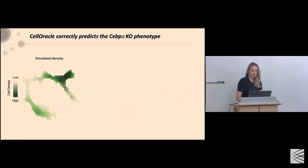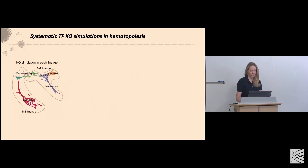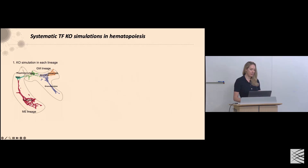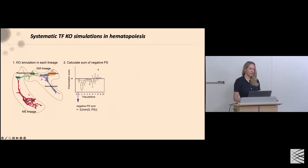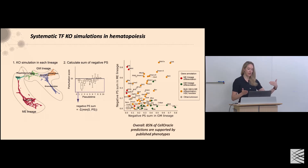CEBP-epsilon was another ground truth knockout dataset included in that paper. Cell Oracle predicts accumulation of cells in progenitor states, which is exactly what we see in the ground truth data — extremely valuable datasets. Kenji then performed knockout simulations in each lineage — down the megakaryocyte-erythroid lineage and the granulocyte-monocyte lineage — calculating the sum of negative perturbation scores. From this data, we predicted phenotypes of all transcription factors we could knock out and went to the literature. Overall, we found 85% of Cell Oracle predictions are supported by published phenotypes.